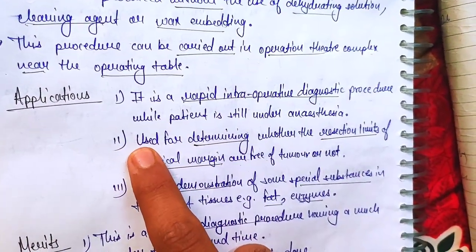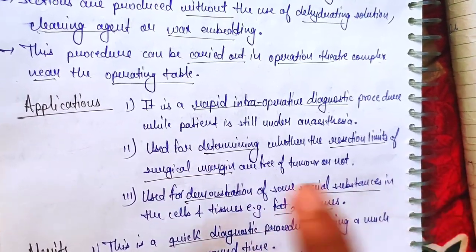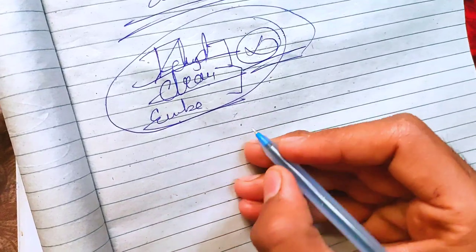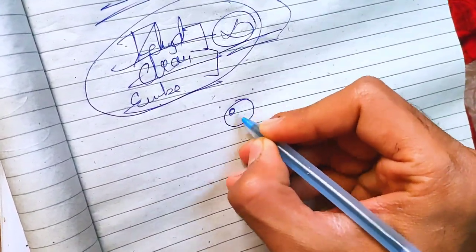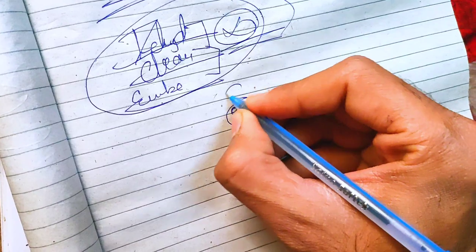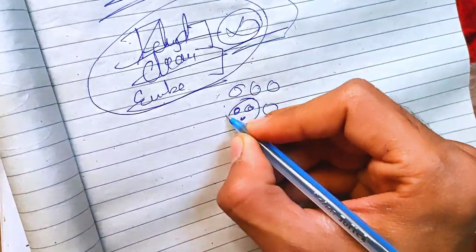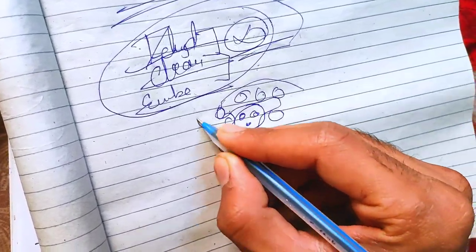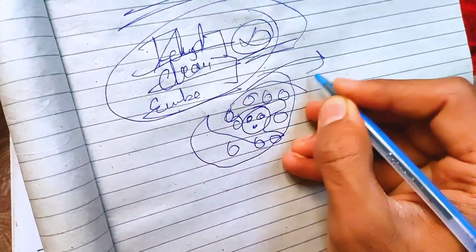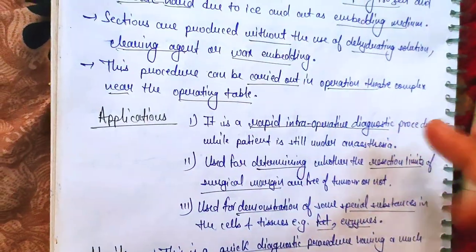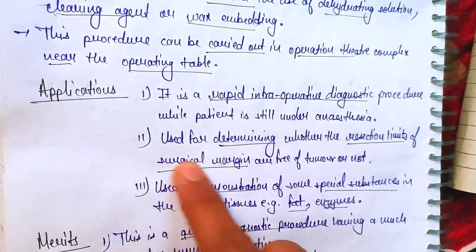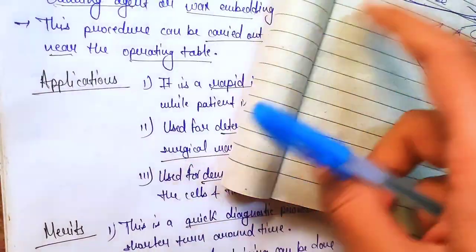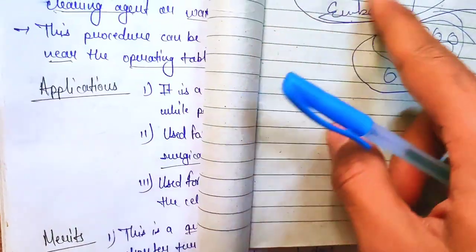The second application is assessment of surgical margins. Suppose a patient has a tumor — there are cancerous cells and surrounding normal cells. The margin section is examined to see whether tumor cells are present within the margins, and to determine whether the resection limits of the surgery are free of tumor or not.